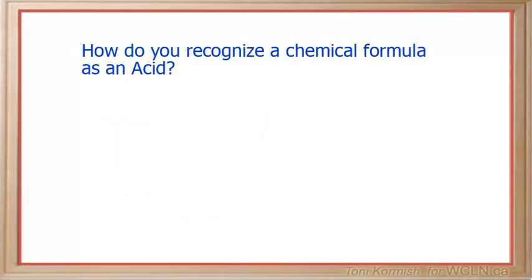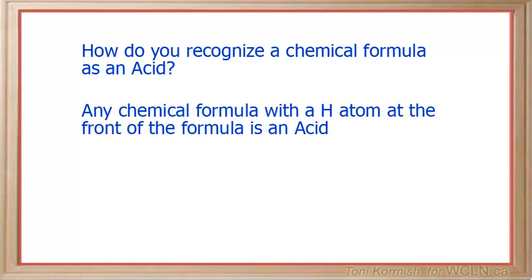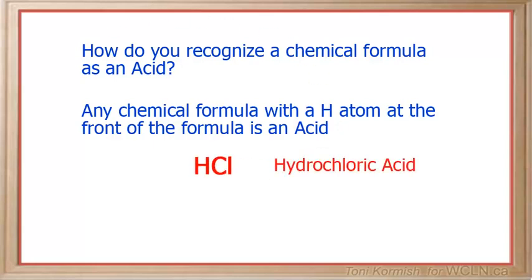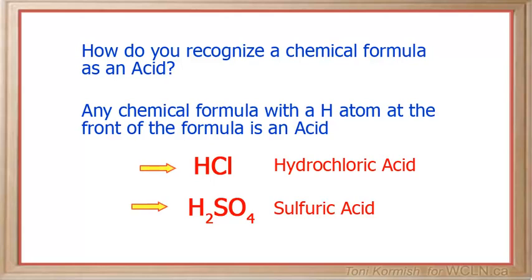How do you recognize a chemical formula as an acid? Any chemical formula with a hydrogen atom at the front of the formula is an acid. For example, HCl is hydrochloric acid, and H₂SO₄ is sulfuric acid. Notice the hydrogen is at the beginning of both of these formulas. Whenever you see a formula with a hydrogen atom out front, you know it is an acid.